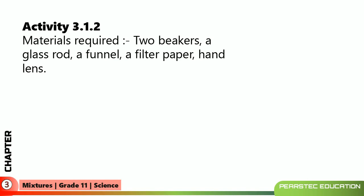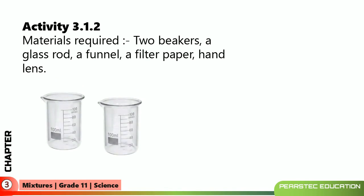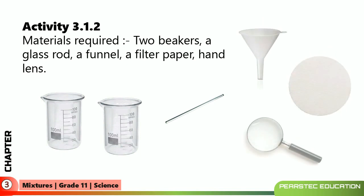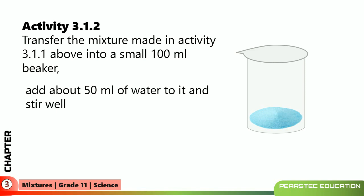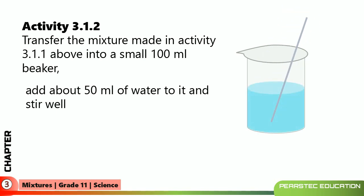There is a connected activity where we mixed the naphthalene balls together with copper sulfate. Here, we need two beakers, a glass rod, a funnel, a filter paper, and a hand lens. Transfer the mixture into a small 100ml beaker, add about 50ml of water into it, and stir well. Once you are stirring it, it will mix and dissolve, and you can obtain a blue color.